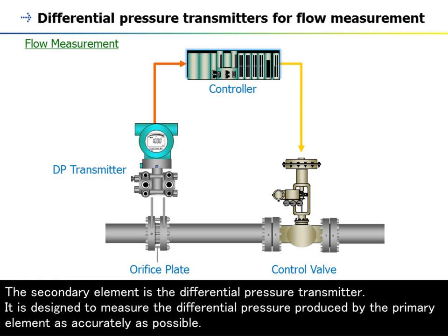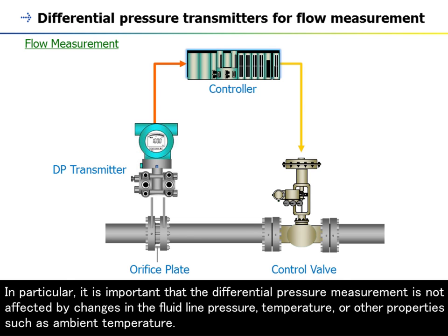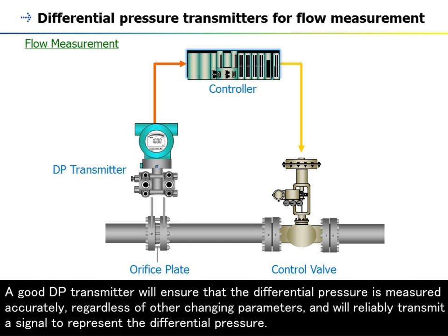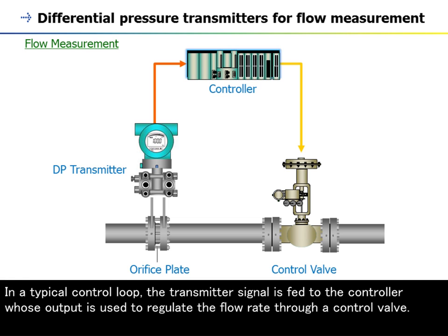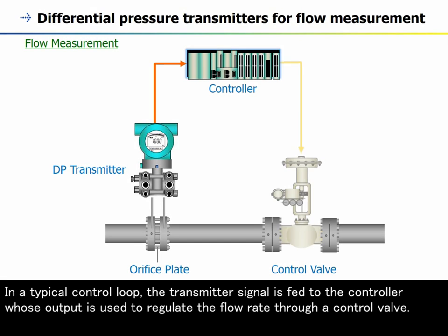The differential pressure transmitter is designed to measure the differential pressure produced by the primary element as accurately as possible. It is important that the measurement is not affected by changes in the fluid line pressure, temperature, or other properties such as ambient temperature. A good DP transmitter ensures accurate measurement regardless of other changing parameters and reliably transmits a signal. The DP flow transmitter output signal may also include square root extraction for flow calculation, although this function is commonly handled in a control system. In a typical control loop, the transmitter signal is fed to the controller, whose output is used to regulate the flow rate through a control valve.